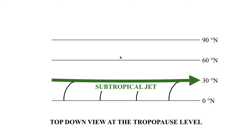Here we're looking at this from a purely conceptual standpoint, and in some of your later meteorology classes you will actually explore this in much greater detail and get into some of the mathematics behind the formation of the jet streams. One thing worth pointing out is there are two main jets in the atmosphere: one is the subtropical jet, which we're looking at right now, and the other is the polar jet, which we'll look at in just a few minutes. Between the two, the subtropical jet tends to be the weaker of the two.